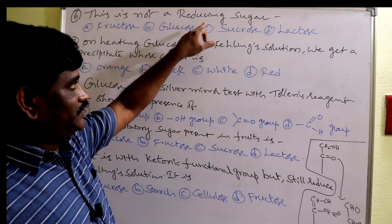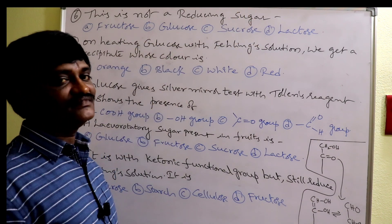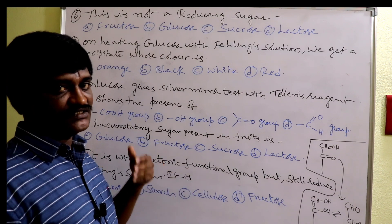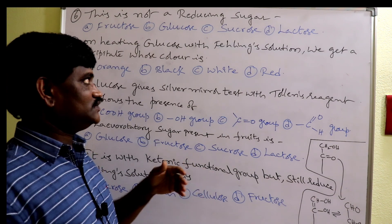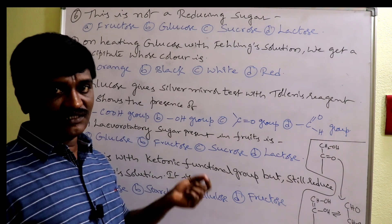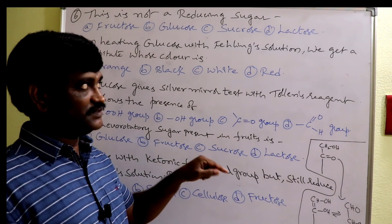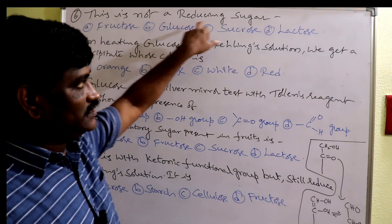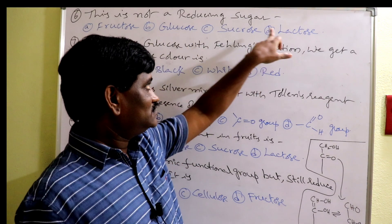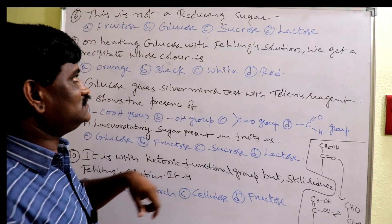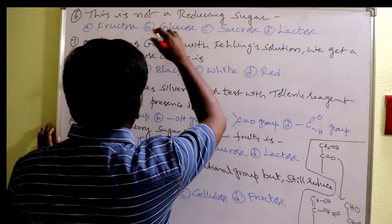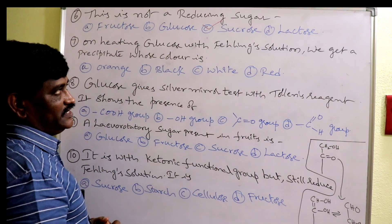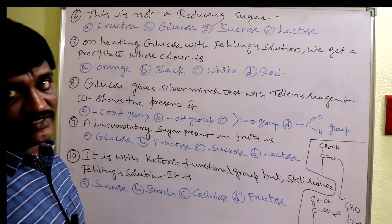Which of the following is not a reducing sugar? Reducing sugars give a positive test towards Tollens, Fehling, and Benedict solution. Examples: all monosaccharides, some oligosaccharides except sucrose. Fructose and glucose are monosaccharides — reducing sugars. Lactose is a disaccharide — reducing sugar. Sucrose is a disaccharide but a non-reducing sugar. Answer: sucrose. Very very important — sucrose is a non-reducing sugar. Lactose and maltose are reducing sugars.